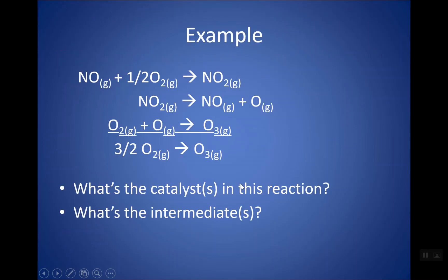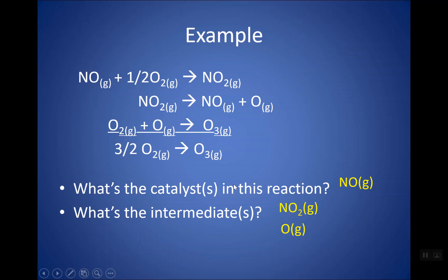Here's an example — identify the catalyst and the intermediates. The catalyst is NO: it's there to start with, used up as a reactant in one step, and then regenerated as a product later, so it cancels out of the overall reaction. There are two intermediates: NO₂ is made in the first step and then used up, and O is made and then used up. Neither NO₂ nor O appear in the overall reaction — those are the intermediates.